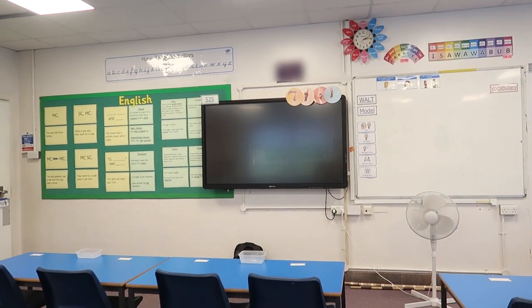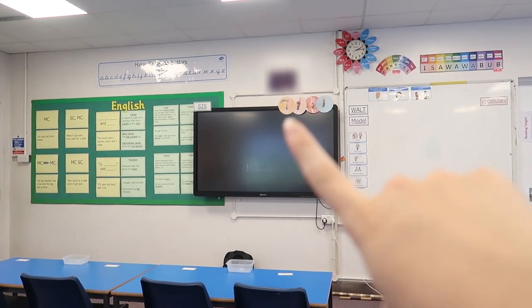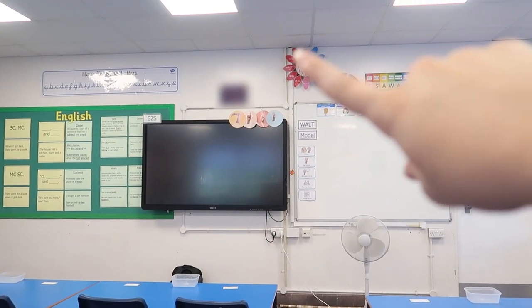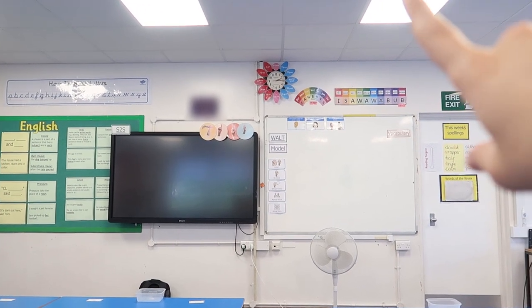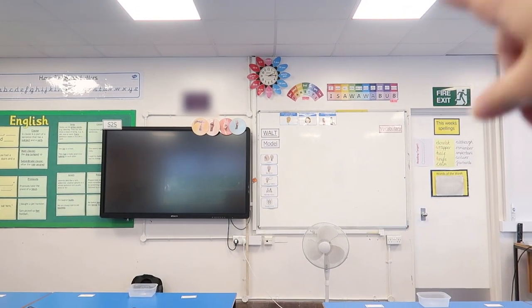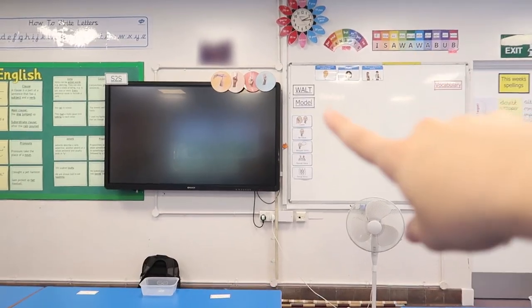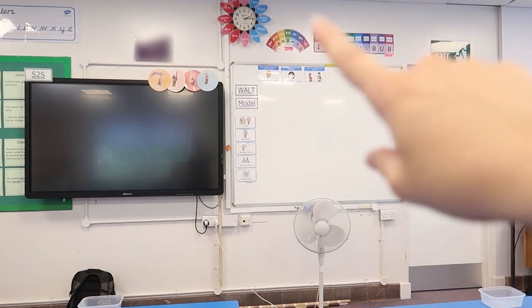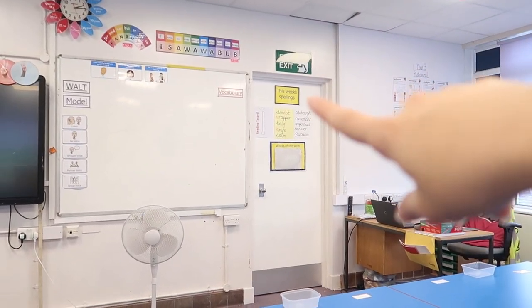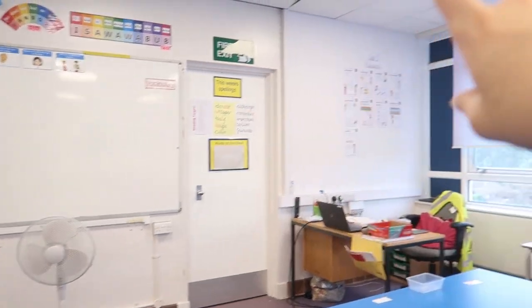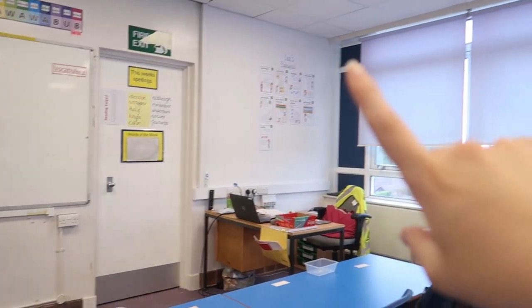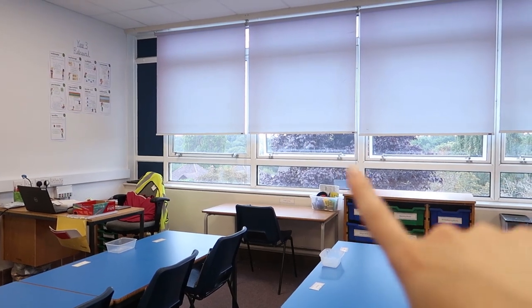Let me show you briefly what the classroom looks like and then I'm going to go home. This is the front of the classroom. We have our English board, I've got my finger signs here, things to help with the time, different conjunctions, the WALT model vocabulary - that's part of the non-negotiables of our school - volume levels, talk to your partner rules. I'll have to update the spellings once I know what they are. There's a reading target poster and some Year 3 retrieval.